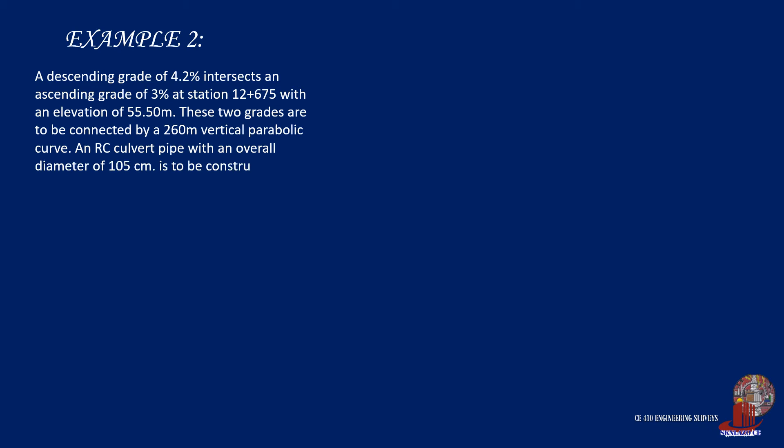Example 2. A descending grade of 4.2% intersects an ascending grade of 3% at station 12 plus 675 with an elevation of 55.5 meters. These two grades are to be connected by 260 meter vertical parabolic curve. A reinforced concrete culvert pipe with an overall diameter of 105 centimeters is to be constructed with its top 50 centimeters below the subgrade. What will be the invert elevation of the culvert?